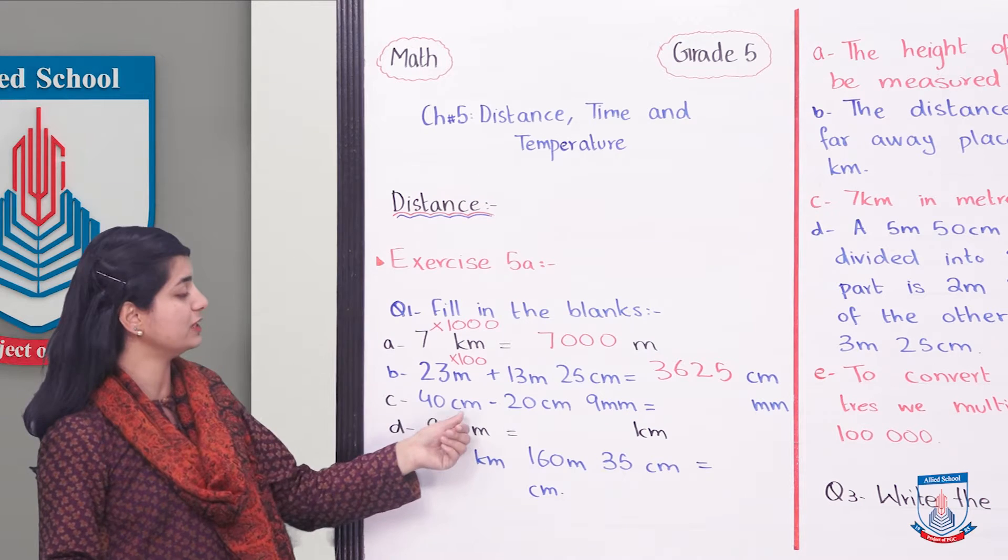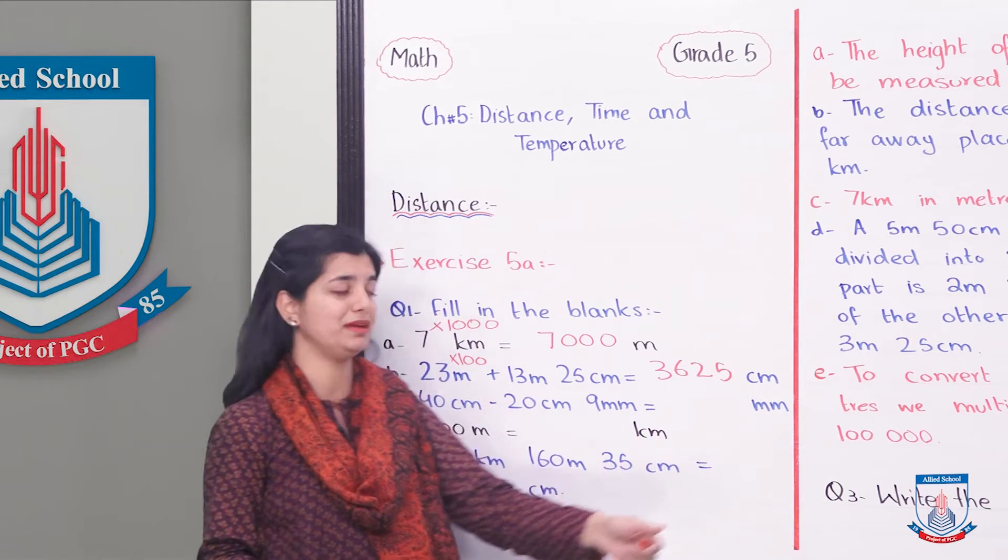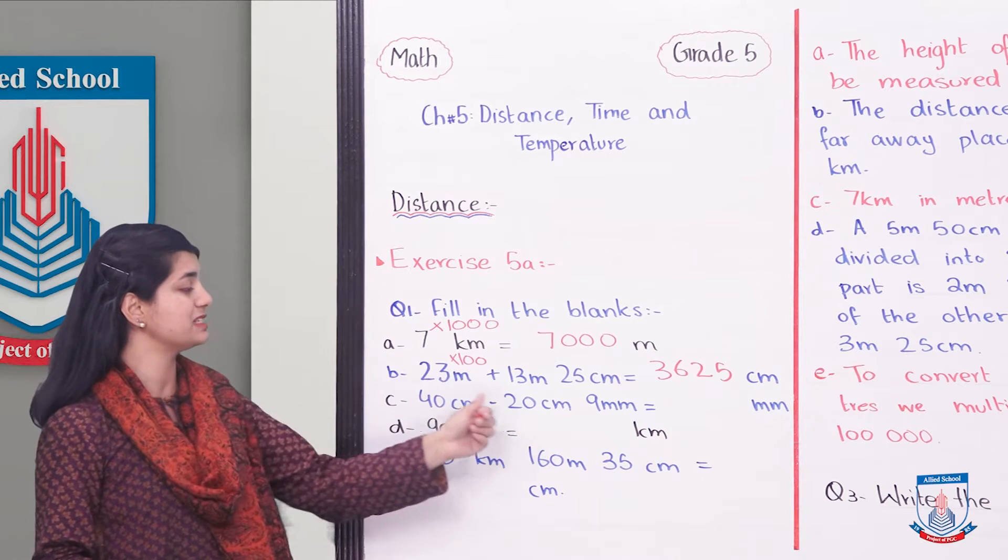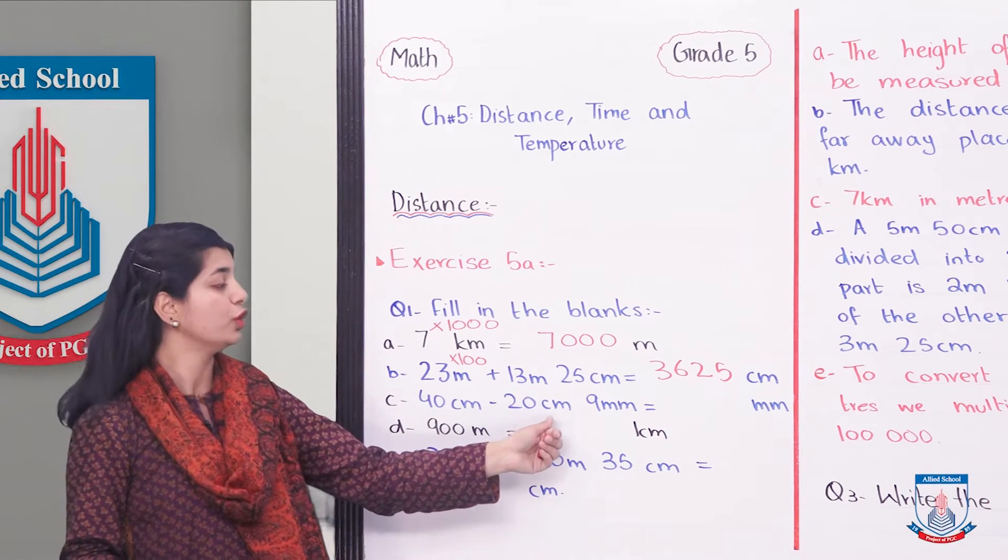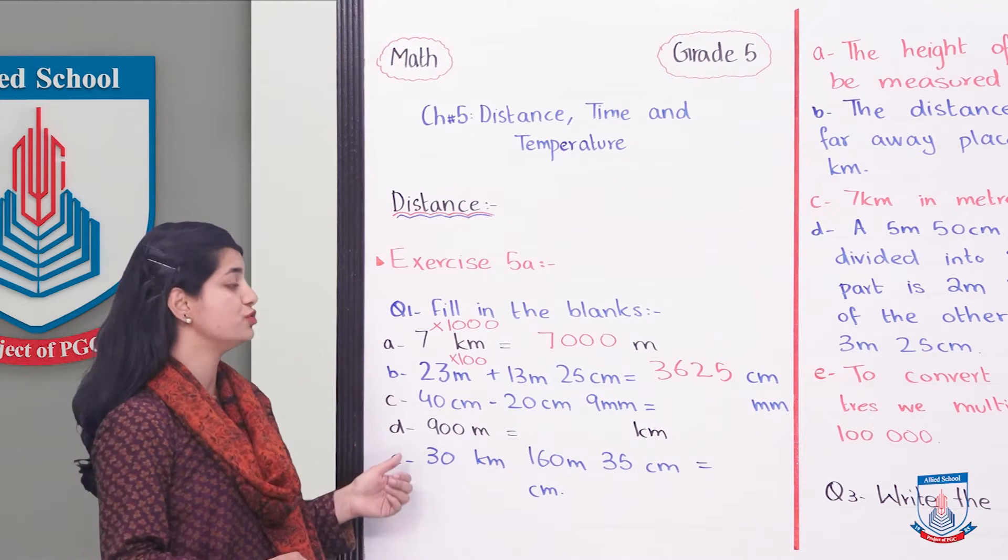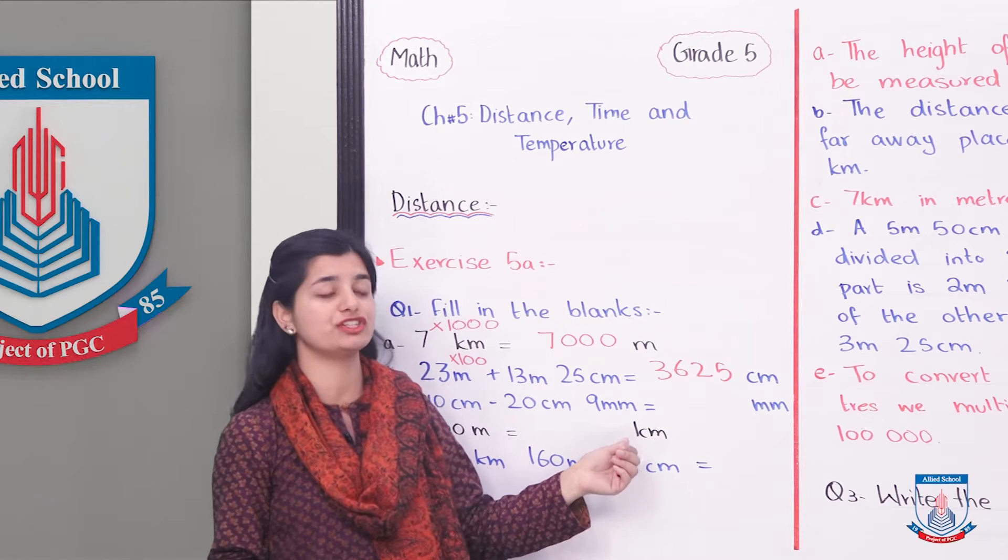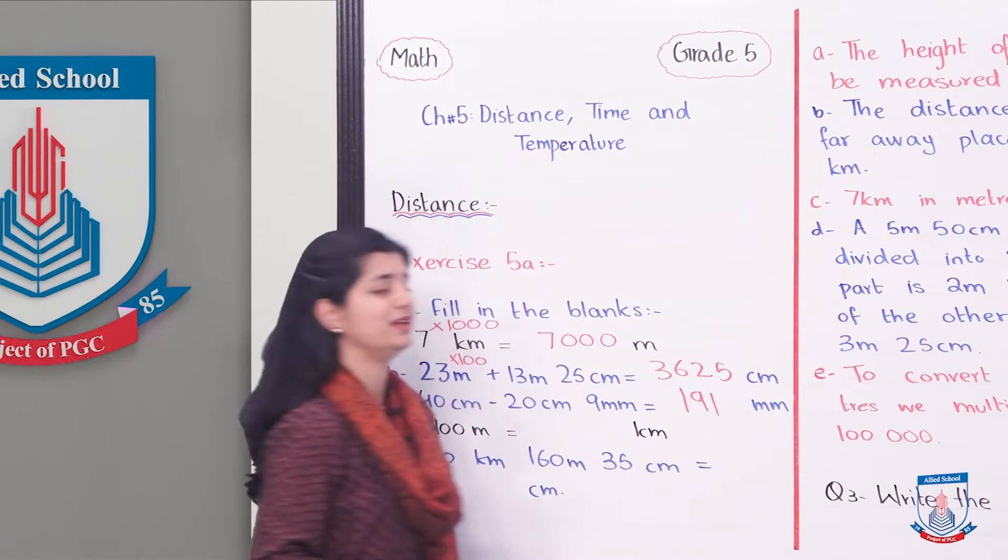Part C is 40 centimeters minus 20 centimeters 9 millimeters equals to dash millimeter. We have to convert to the same unit. That will be approximately 400 millimeters minus 209 millimeters. We are left with 191 millimeters.